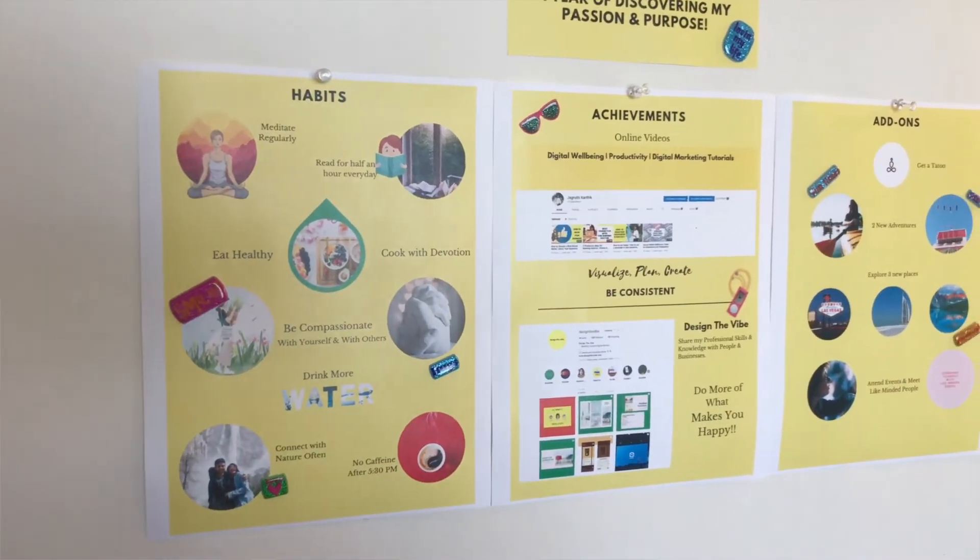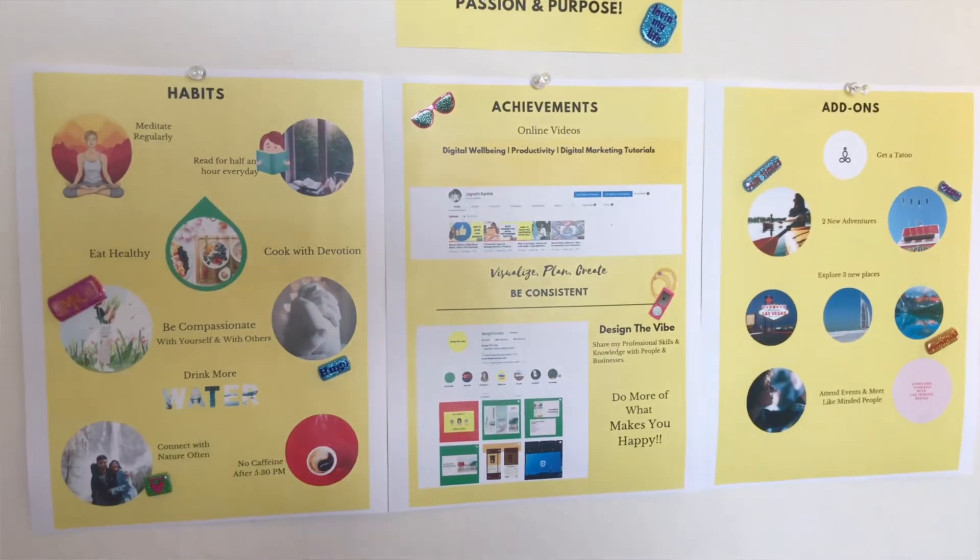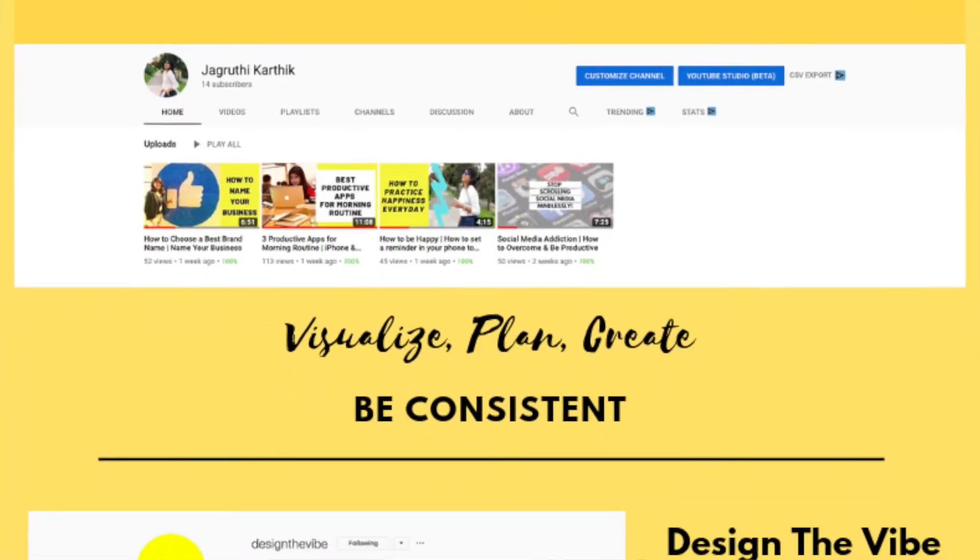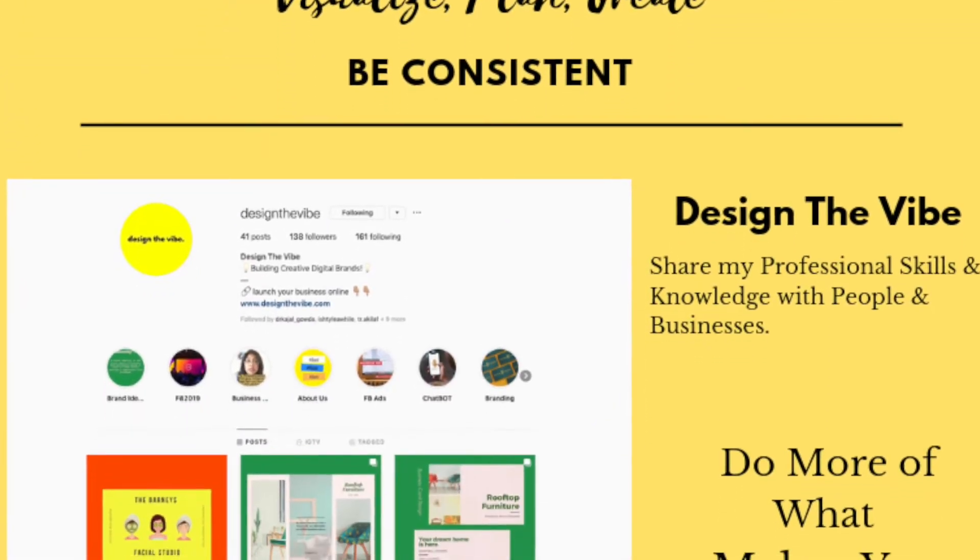All your whats will come under achievements. Don't make the achievements list exhaustive — I have only two achievements. One is to create more online videos consistently this year, and the second is to share my professional experience as a digital consultant, sharing my knowledge with people and businesses. These are just my two achievements that come under the achievements section.